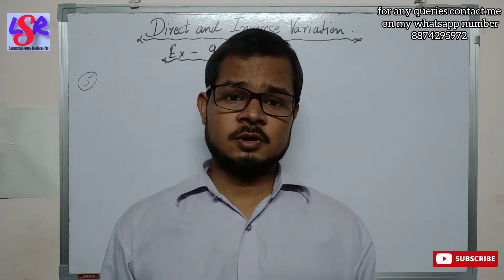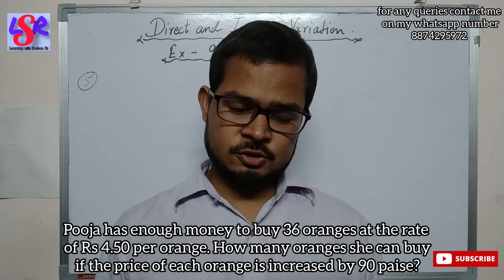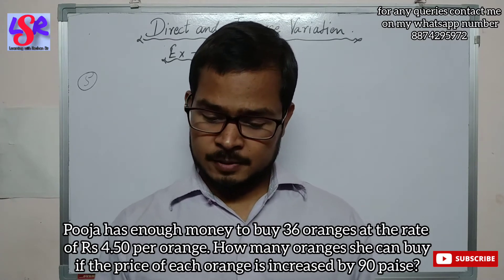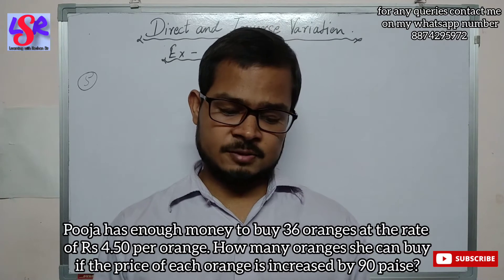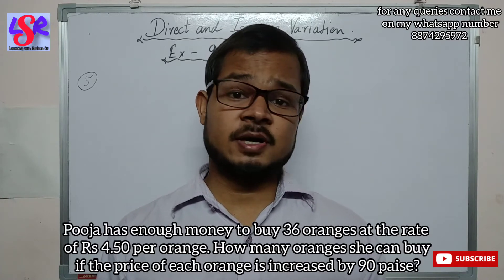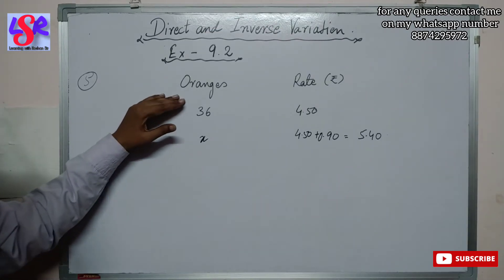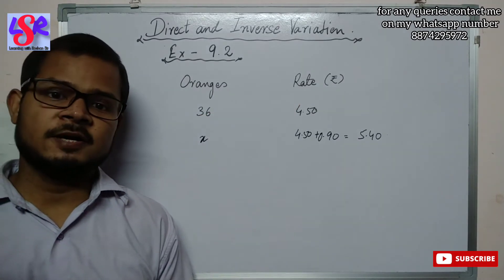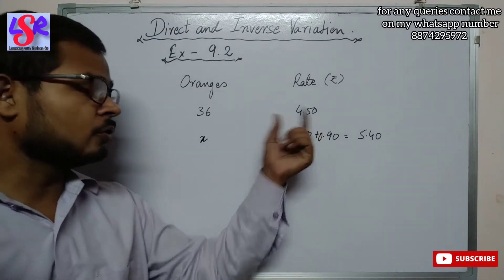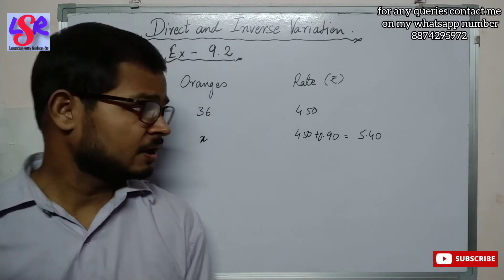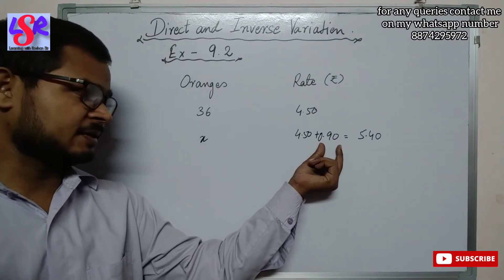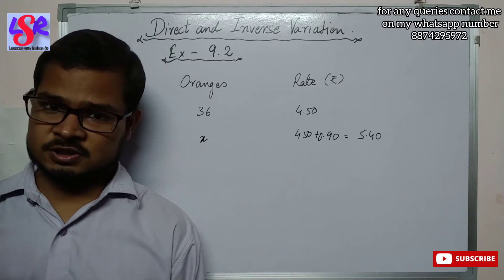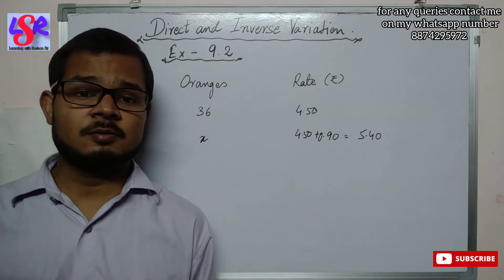Now let's go with question number 5. Pooja has enough money to buy 36 oranges at the rate of rupees 4.50 per orange. How many oranges can she buy if the price of each orange is increased by 90 paise? The price increases by 90 paise and becomes rupees 5.40. We need to find the number of oranges Pooja can buy with her limited amount of money.